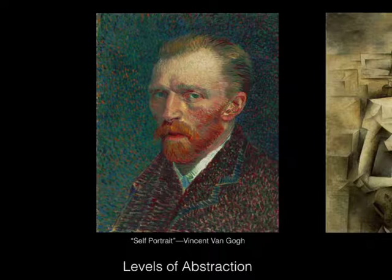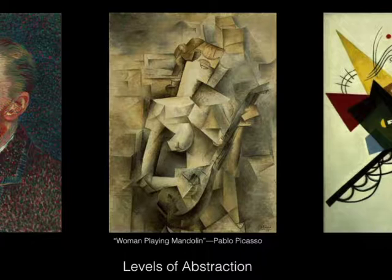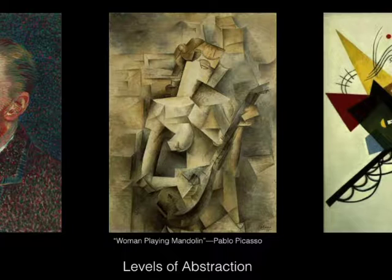After the Impressionist and Post-Impressionist period, art became a little bit more abstract. Here we have Woman Playing the Mandolin by Pablo Picasso, and you can see it's much more abstracted — meaning much less realistic. So if abstract art is defined as art that's not realistic, this is less realistic than the Van Gogh. You can still tell there is a woman there playing some sort of instrument, but it's definitely anything but realistic.